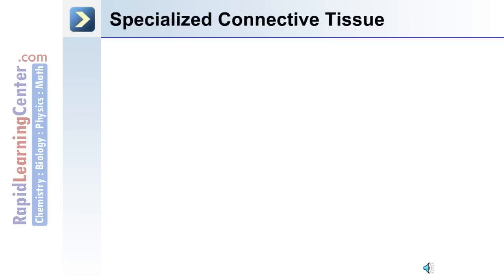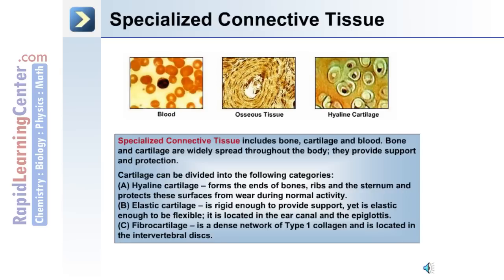The third major type is specialized connective tissue. This includes blood, osseous tissue or bone, and hyaline cartilage. Bone and cartilage are widely spread throughout the body and provide support and protection. Cartilage can be divided into hyaline cartilage, which forms the ends of bones such as the ribs and the sternum and protects these surfaces from wear during normal activity; elastic cartilage, which is rigid enough to provide support yet elastic enough to be flexible, located in the ear canal and the epiglottis; and fibrocartilage, which is a dense network of type 1 collagen located in the intervertebral discs of the vertebral column.